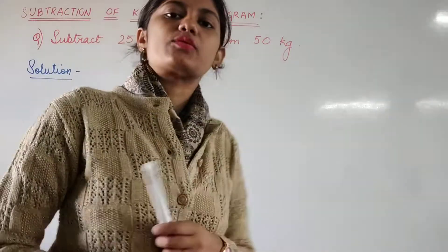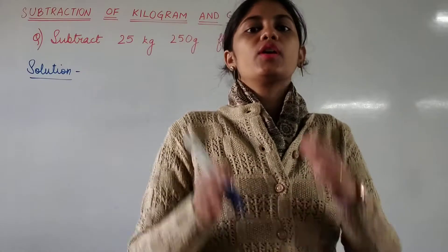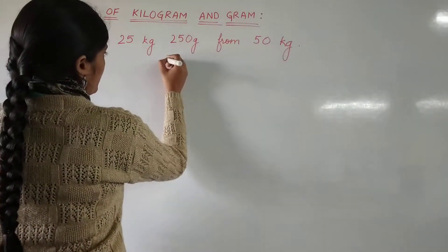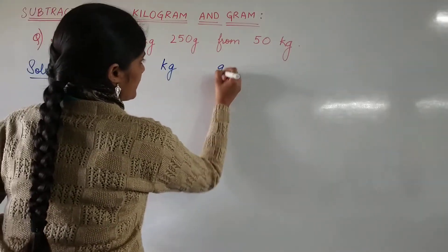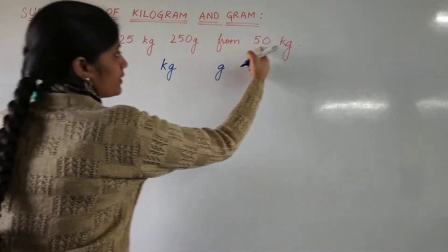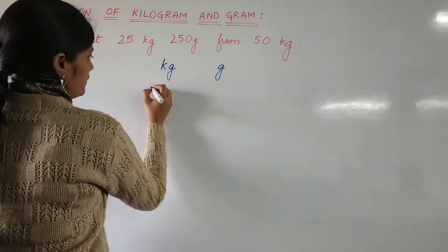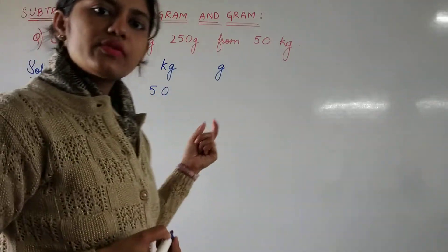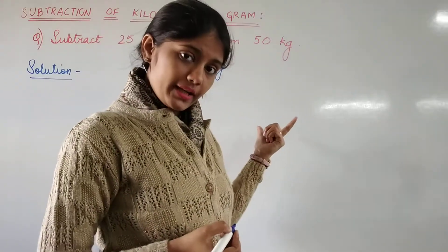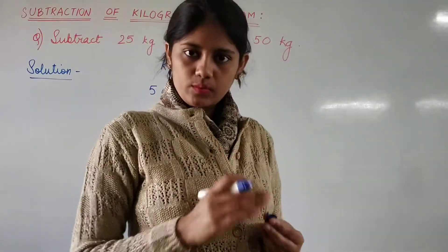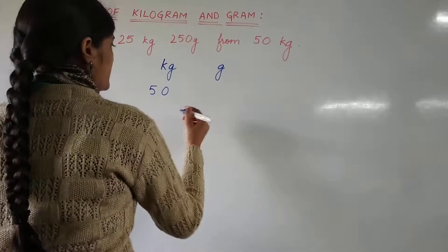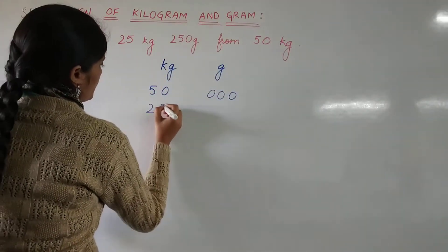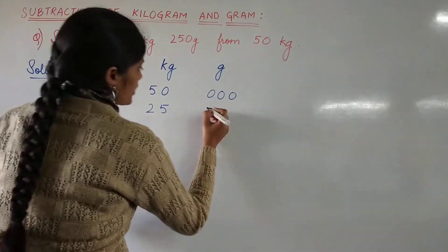For subtracting these two numbers, we will first write them in columns. So let's write, we will first make a separate column for kg, gram. Here this is the minimum one. It is just 50 kg, no gram. So how many zeros we will take? We will take three zeros in place of gram for carrying out the subtraction.